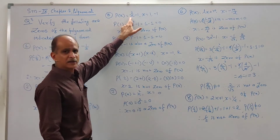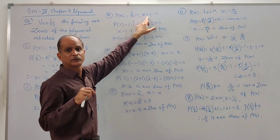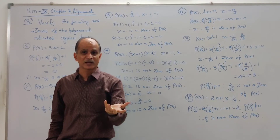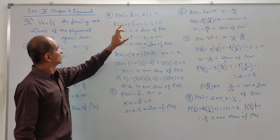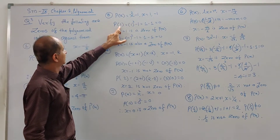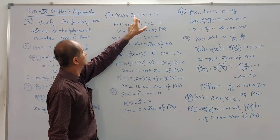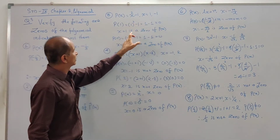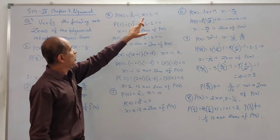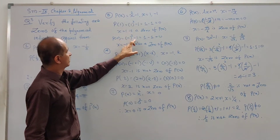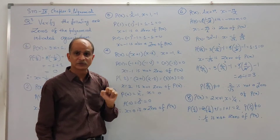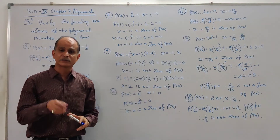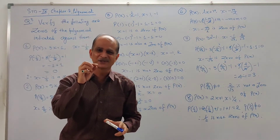Third example: P(x) = x² - 1. Two values of x are given: x = 1 and x = -1. We check both. P(1) = 1² - 1 = 1 - 1 = 0, so x = 1 is a zero of this polynomial. Now P(-1): (-1)² - 1 = 1 - 1 = 0. So at x = -1 the value of the polynomial is also 0, and x = -1 is also a zero of this polynomial.